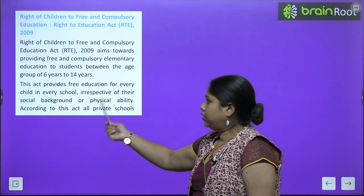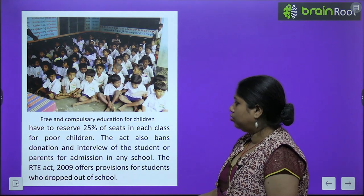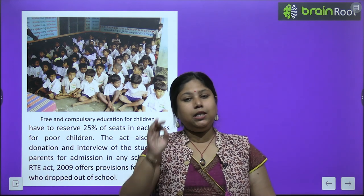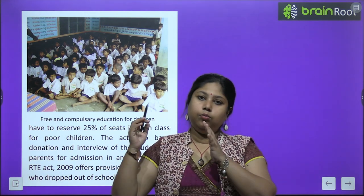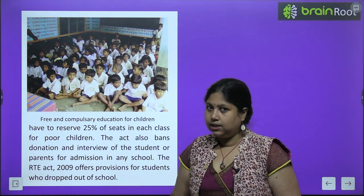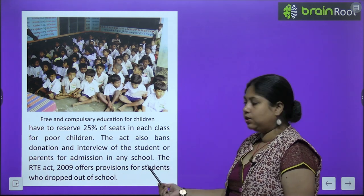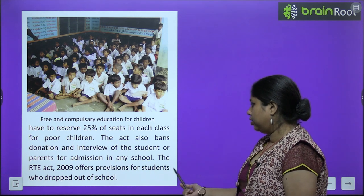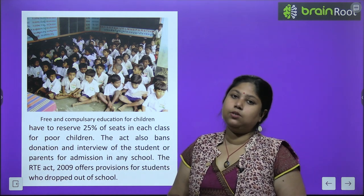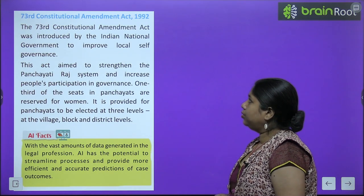RTE provides free education for every child in every school irrespective of their social background or physical ability. According to this act, all private schools have to reserve 25% seats in each class for poor children — the school cannot charge any fees from them. The act also bans donations and interviews of students or parents for school admission. The RTE Act 2009 also offers provisions for students who dropped out to re-enroll and complete their education.